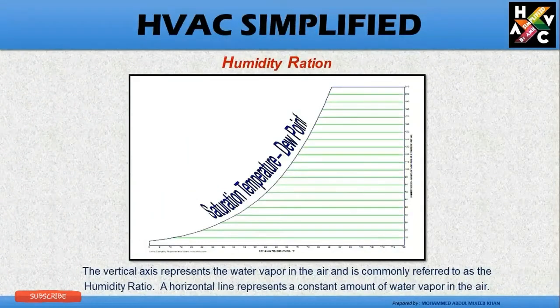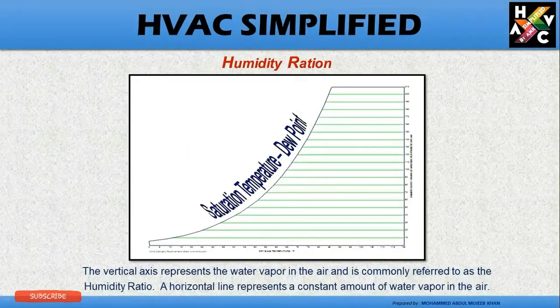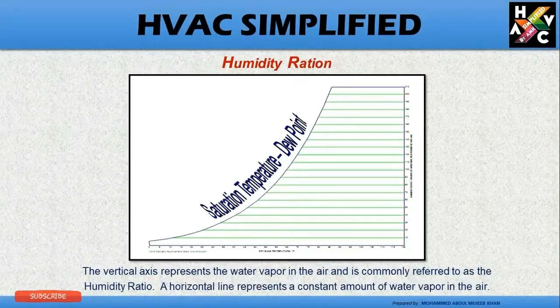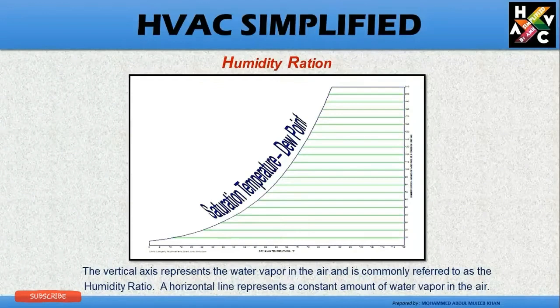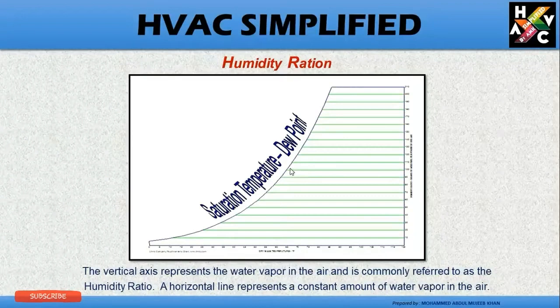Humidity ratio. The vertical axis represents the water vapor in the air and is commonly referred to as the humidity ratio. The horizontal line represents a constant amount of water vapor in the air. This horizontal line on the psychrometric chart represents humidity ratio.